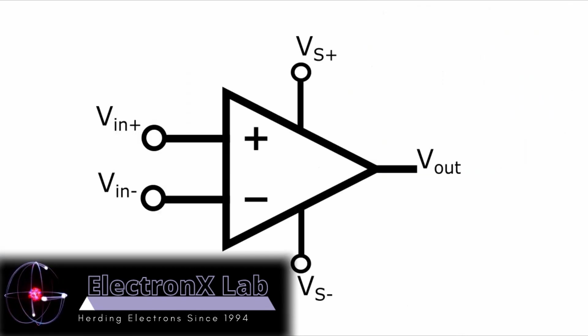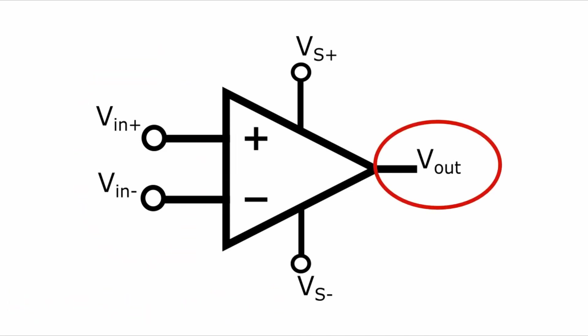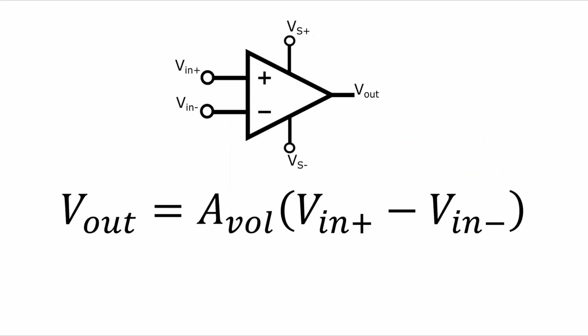An operational amplifier, commonly referred to as an op-amp, is a high-gain voltage amplifier device with a differential input and a usually single-ended output. The basic function of an op-amp is that the output is equal to a voltage gain, this AVOL, created by the op-amp times the difference between the two inputs, this Vin plus and Vin minus.